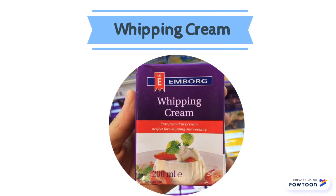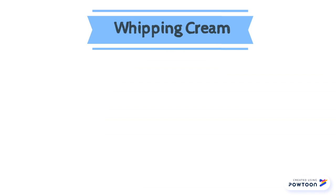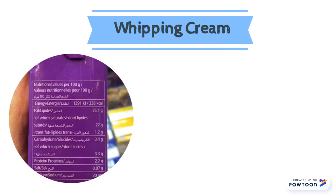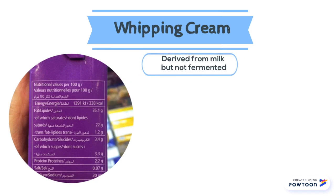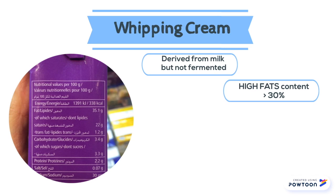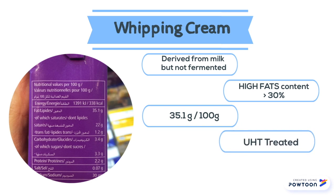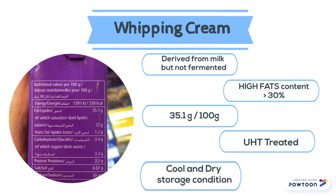This is the whipping cream chosen for the experiment. Whipping cream is derived from milk but is not fermented. It has a very high fat content which accounts for at least 30% of the total composition. In this whipping cream, the fat amount is 35.1g per 100g. It has undergone ultra high temperature treatment so it can be stored at cool and dry conditions.